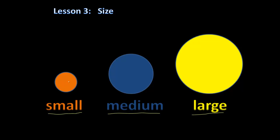Let's number these objects so we can call them by numbers. The first object can be one, the second object can be two, and the third object can be three. This first object is small because it's smaller than the second object and the third object. That's why it's the small object.